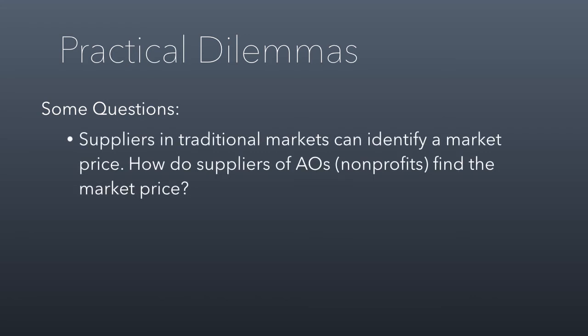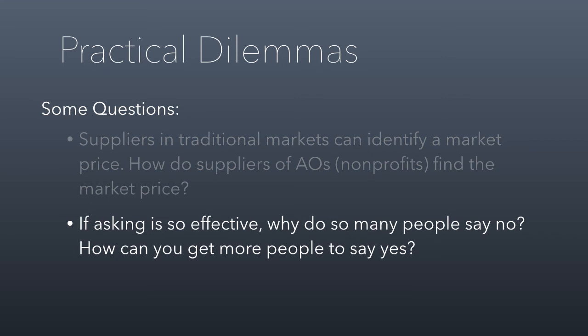Questions we'll discuss in class: suppliers in traditional markets can identify a market price — if I sell lettuce, I can see how much everybody else is selling lettuce for. How do suppliers of altruistic opportunities find the market price? Also, if asking is so effective, why do so many people say no, and how can you get more people to say yes? A third question: all of this assumes that donors want the right thing. If I'm telling you to focus on giving donors what they want, it assumes donors want the right things. Is that necessarily true? Do donors always want the right thing?